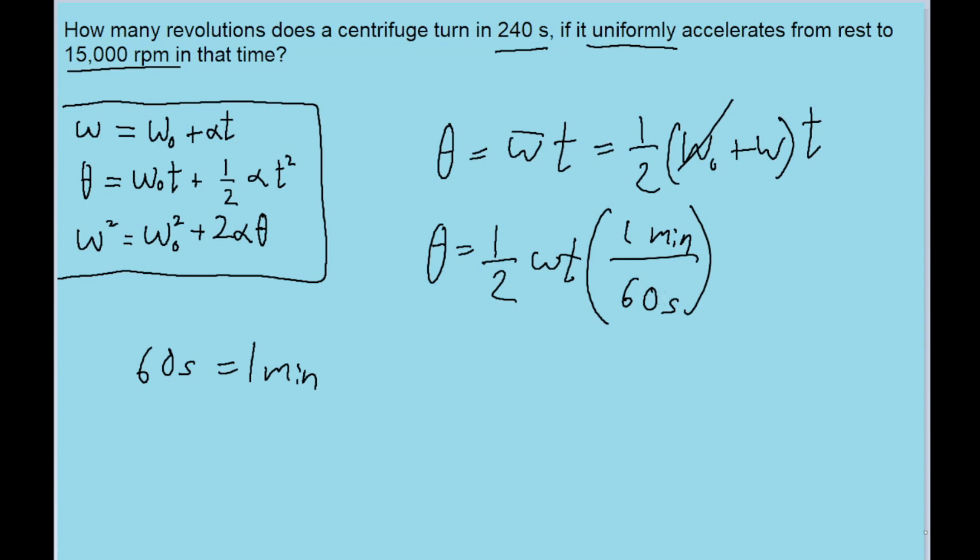An alternative way of thinking about it is that the second in the denominator could cancel out the seconds in the numerator for the time variable, which would convert the time from seconds to minute. It doesn't change anything, just an alternate way of thinking about it.